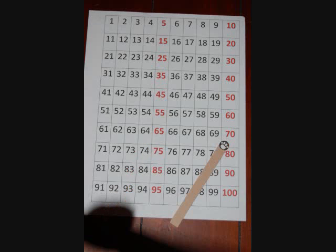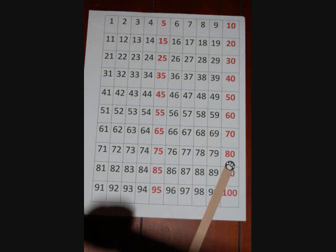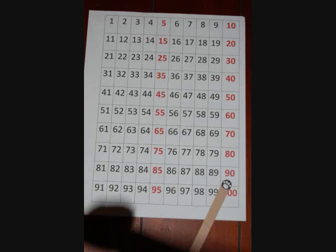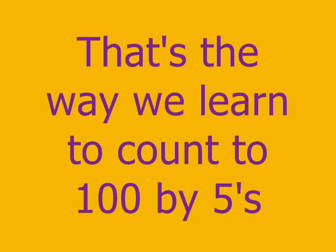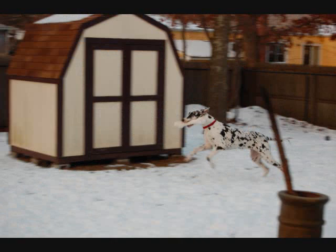Sixty-five, seventy, seventy-five, eighty, eighty-five, ninety, ninety-five, one hundred — that's the way we learn to count to one hundred by fives.